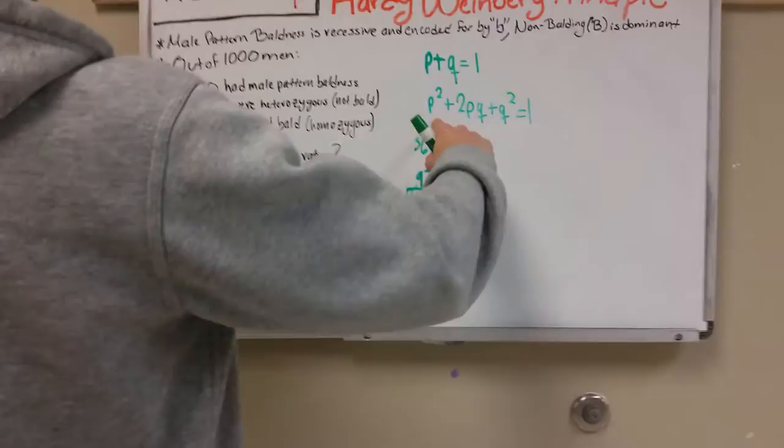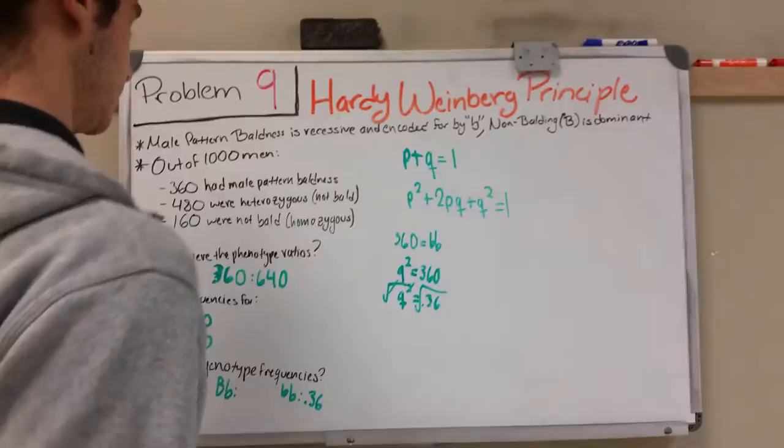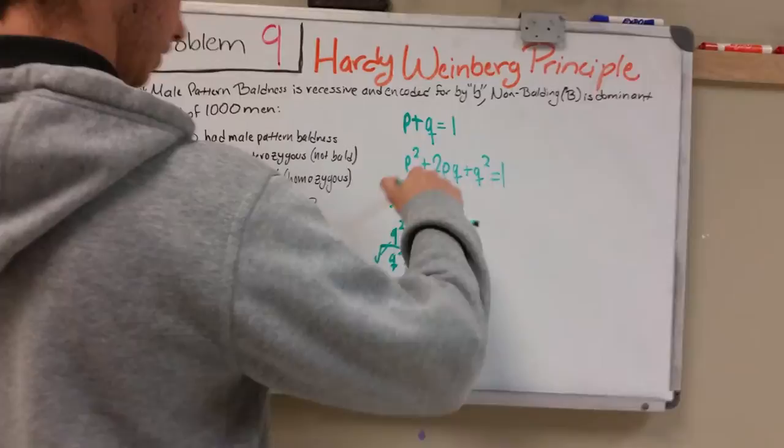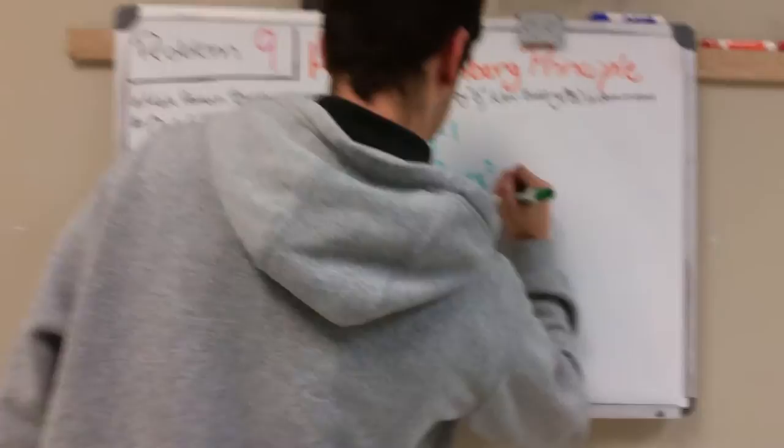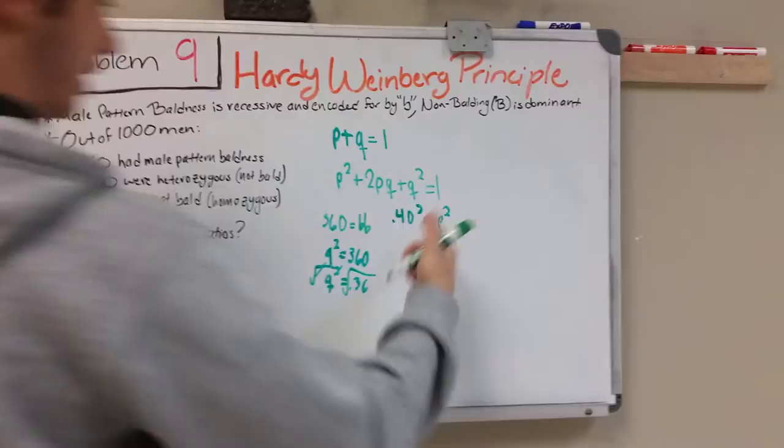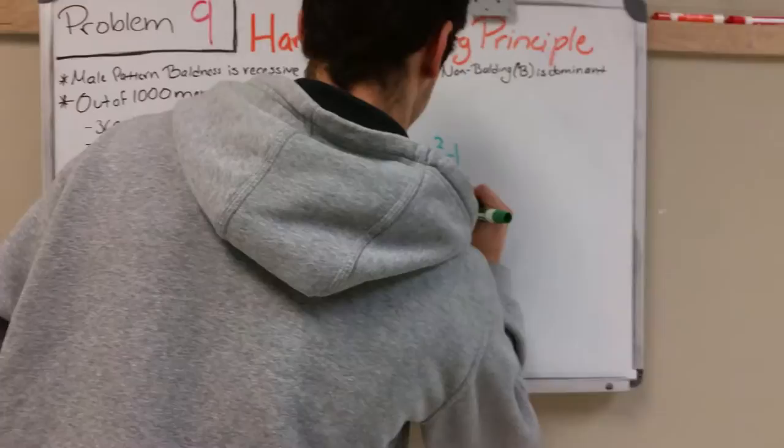Now the formula P squared is homozygous dominant and 2PQ is the heterozygous. Since we have p, we can just square it and we get our homozygous dominant. We get 0.16 when you square 0.40, which equals p squared. 0.40 squared gives you 0.16.